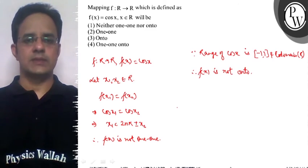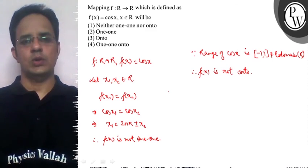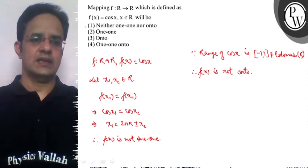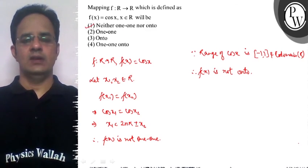So the final answer of this problem is that f(x) = cos x is neither one-one nor onto. Option one is the correct option. Hope you understood it well, best of luck.